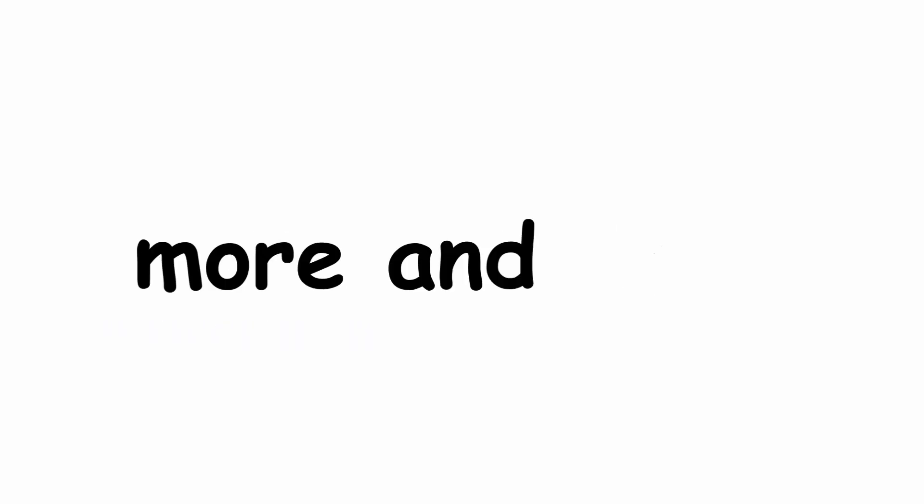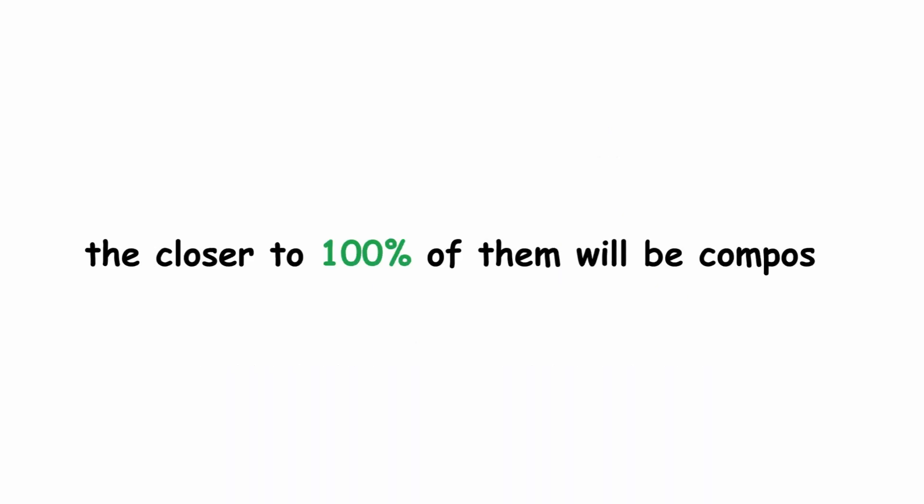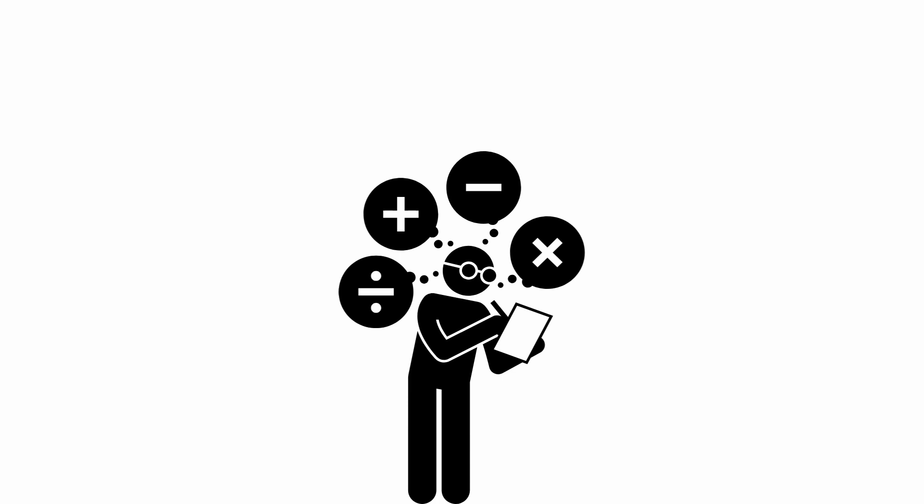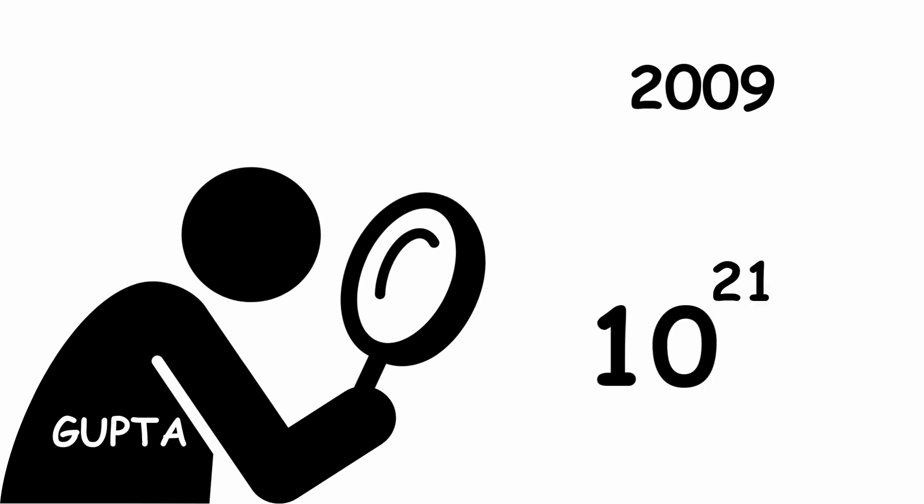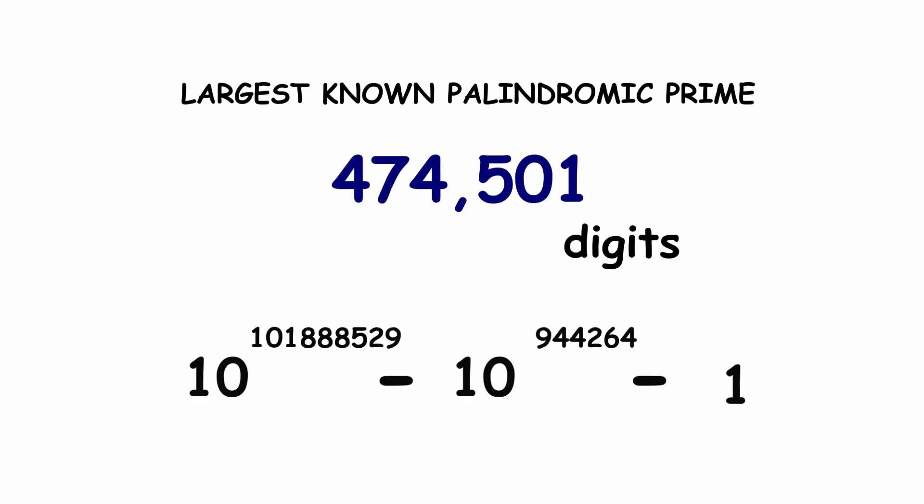Essentially, the more and more palindromic numbers you take into account in a given base, the closer to 100% of them will be composite. As for computing the actual values of palindromic primes, a search was performed by Gupta in 2009, finding all palindromic primes up to 10 to the 21st power. The largest known palindromic prime has 474,501 digits, expressed like this.